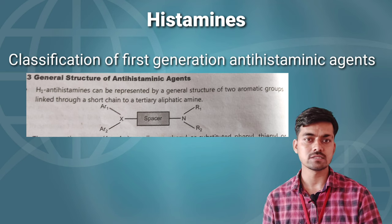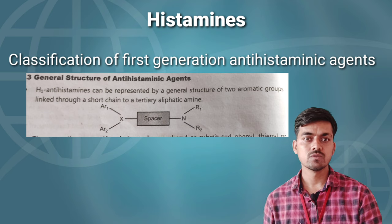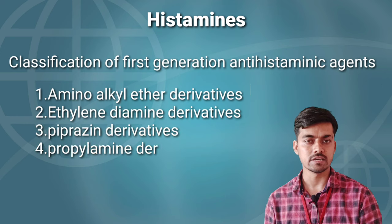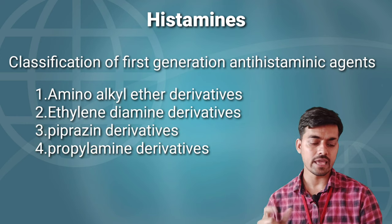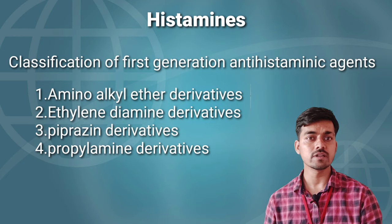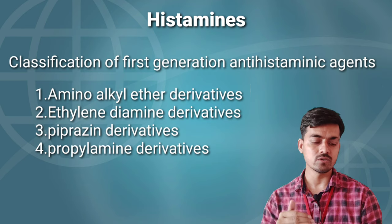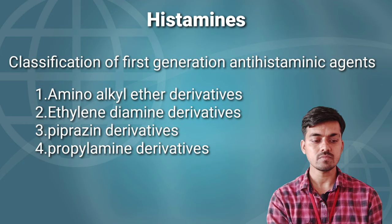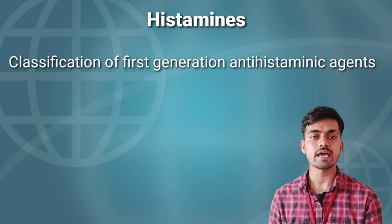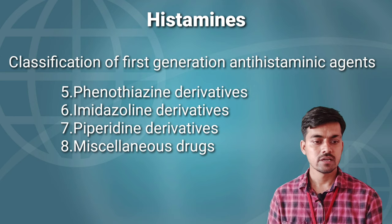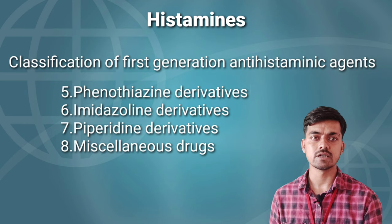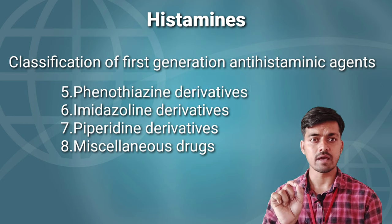First-generation antihistamine agents are further classified into eight types: aminoalkyl ether, ethylenediamine derivatives, piperazine derivatives, propylamine derivatives, phenothiazine derivatives, imidazoline derivatives, piperidine derivatives, and miscellaneous derivatives. These are the subtypes of H1 receptor antagonists.